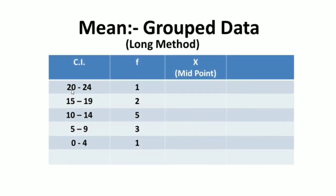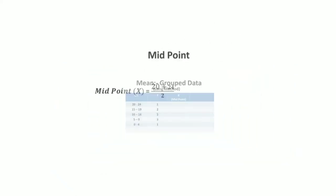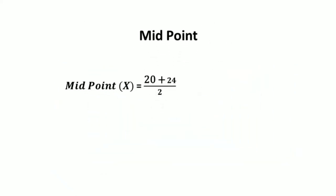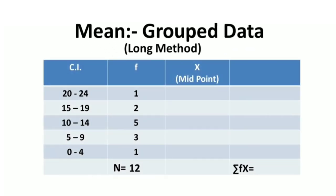So for the first class interval, the lowest score is 20 and the highest score is 24. So 20 plus 24 divided by 2 equals 22. The midpoint for this class interval is 22. In the same way, we calculate the midpoints for all the class intervals.